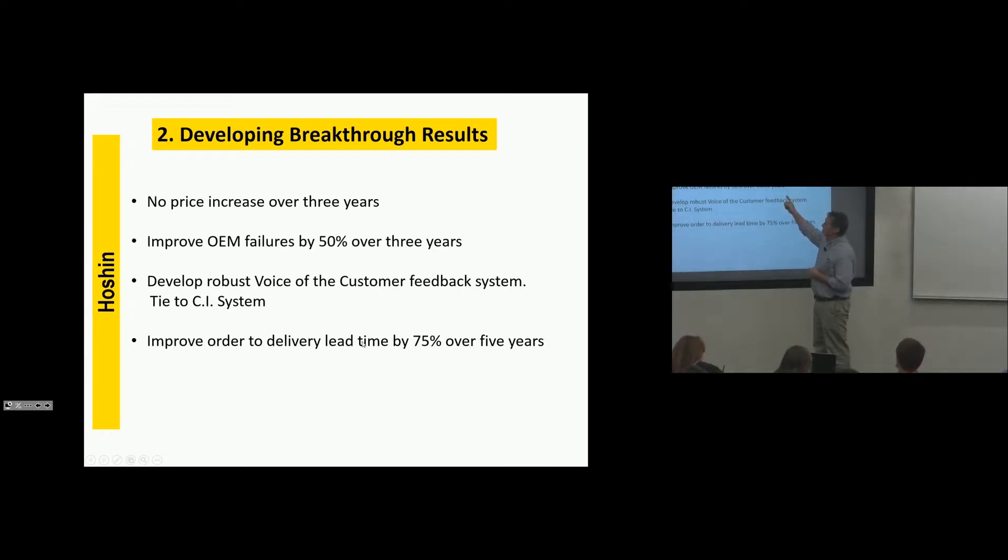Because there is no structure in place that drives improvement necessarily the way it should, being customer focused. Improve OEM failures by 50% over three years. It's easy to do. Develop robust voice of the customer feedback system. Tie it to the continuous improvement system. What's that saying? What are all these things saying right here? Focus on the customer. Focus on the customer.